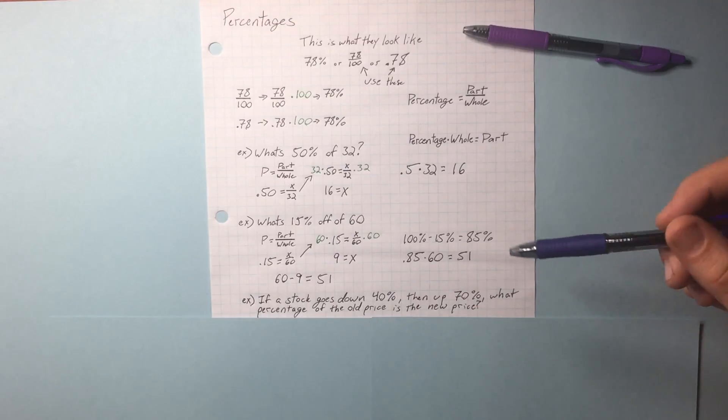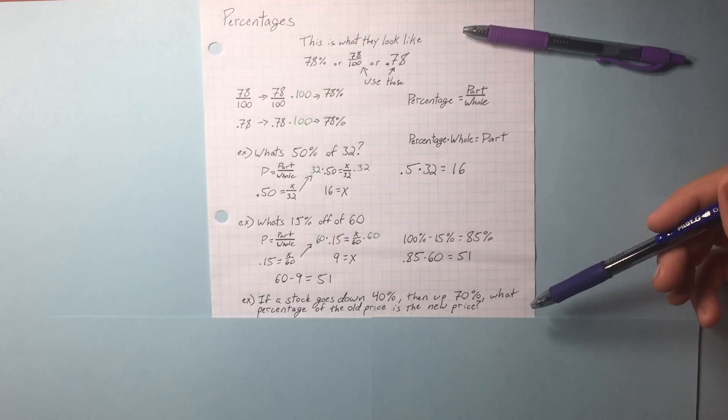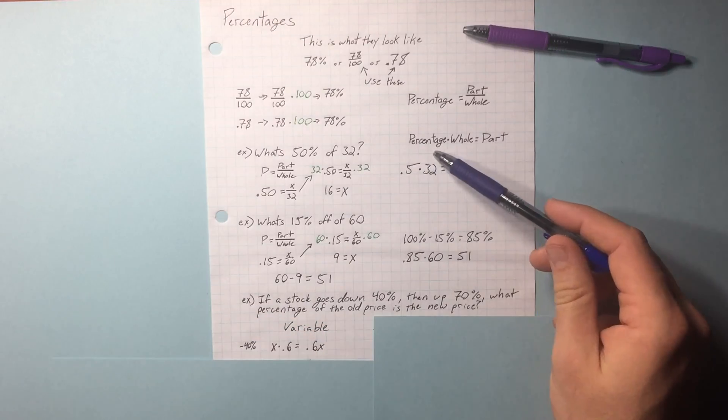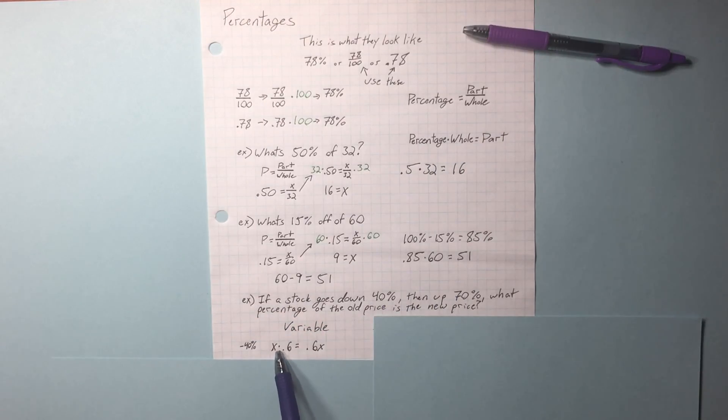Let's look at this example and see if you can solve it yourself. They don't give us the price of the stock, so we have two choices. We're just going to use a variable, just like this equation up here. Our whole times the percentage.